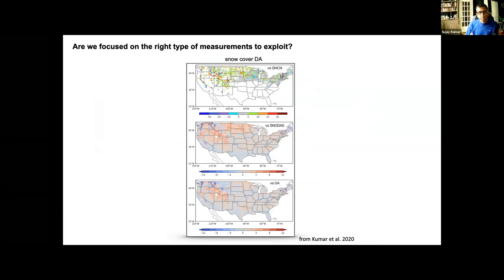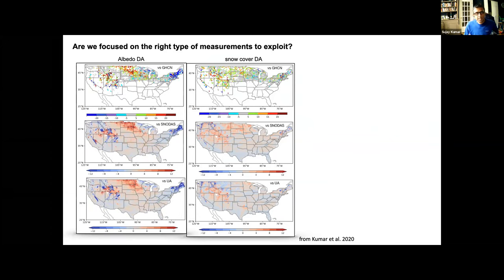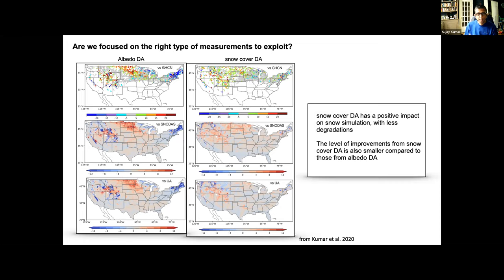Another question I've been thinking about is are we focused on the right type of measurements to exploit. There's a ton of papers in the community looking at assimilating snow cover data which is essentially a qualitative measurement. It just gives you information about the presence or absence of snow and then we come up with all kinds of rules to exploit that information into a quantity snowpack. Recently we tried exploiting albedo measurement from these same sensors. Compared to the number of snow cover studies I can count on my hand the number of albedo data assimilation studies.